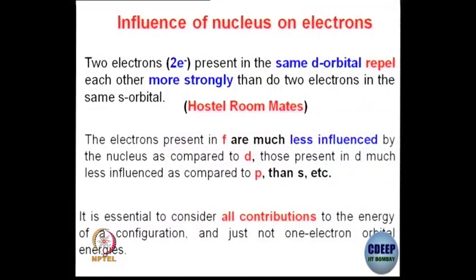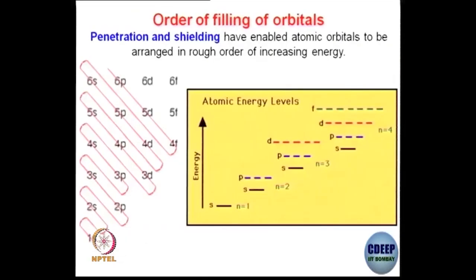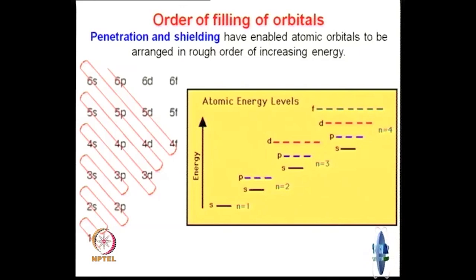So when you are trying to calculate or understand any effect by these different electrons, you have to think of the bigger picture — how much penetrating they are, how much repulsion they will have with each other. Now I will discuss the order of filling of orbitals. You have studied that the order of filling should be: 1s first, then 2s, then 2p, 3s, 3p — not 3d — then 4s, then 3d. This is where we need to understand: why after 3p, it is not 3d that gets filled, but 4s.